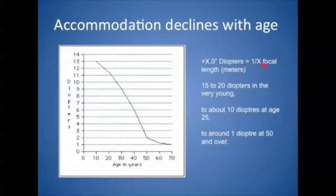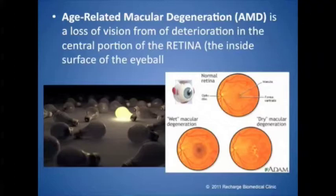Accommodation, meaning like a macro lens focusing close-up, declines with age — probably as a function of the stiffness of the lens. It's measured in diopters, and you can see when you're a little young kid you can see right up close to your eyes. As you get older, 25 is the magic number when everything starts to go literally downhill, and by the time you're in your 40s or 50s, you're having to hold things at arm's length. And that is presbyopia.